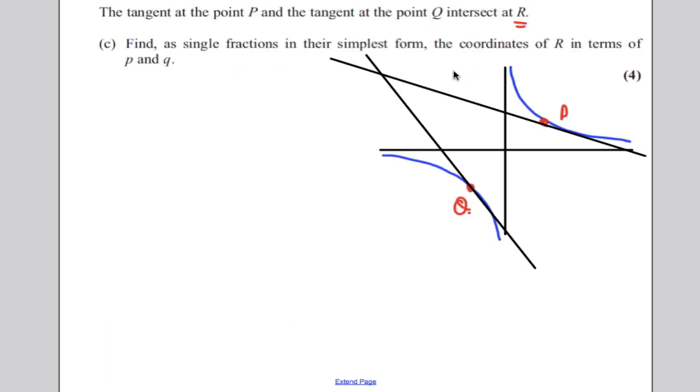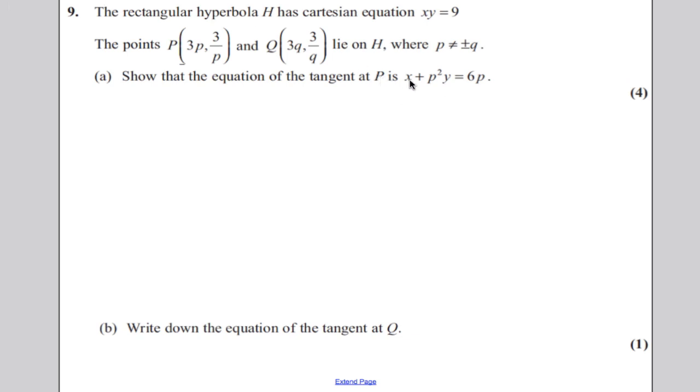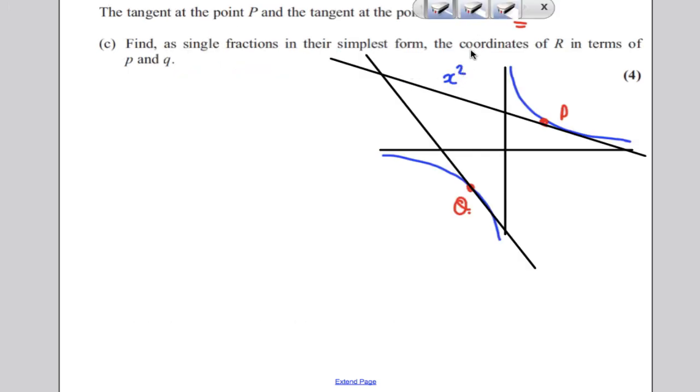Now, we know from previous parts the equations of each of these tangents. The equations of each of these tangents are, this one here is x + p²y = 6p. And we know this one here is x + q²y = 6q.